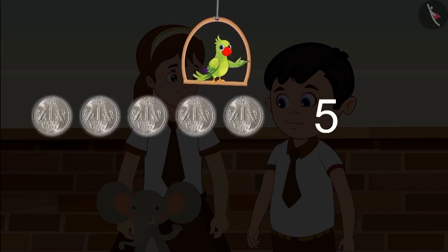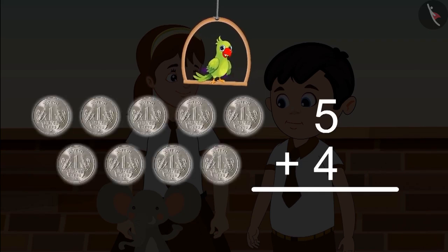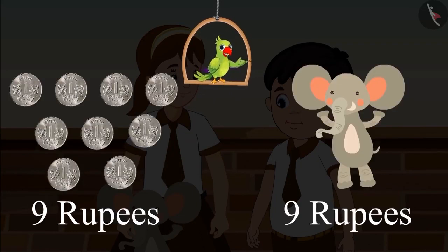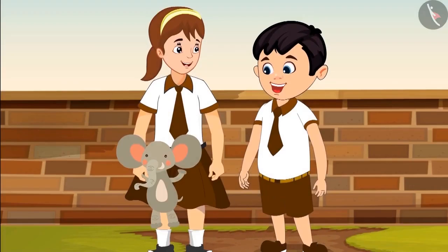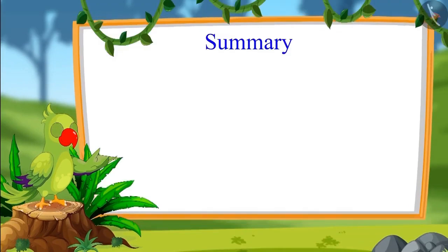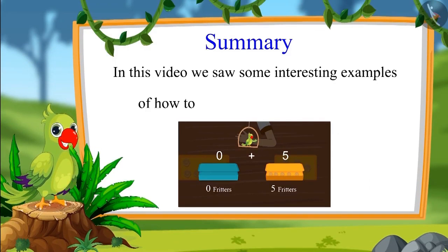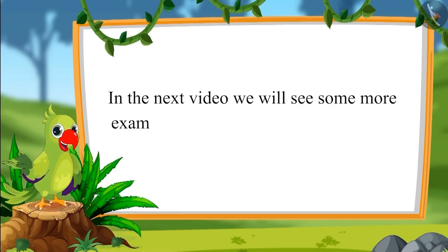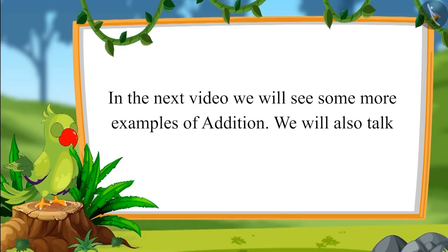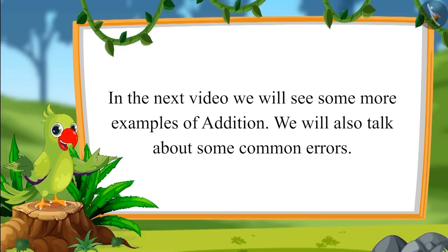Together they have five, six, seven, eight, nine. We can also write it in an organized manner — when we add five rupees and four rupees we get nine rupees. Chotu and Aarti together have nine rupees and the elephant costs nine rupees. So they bought the stuffed toy! In this video we saw interesting examples of how to add single digit numbers. In the next video we will bring more exciting examples of addition and talk about common errors to avoid. Bye-bye children!